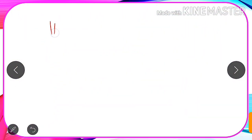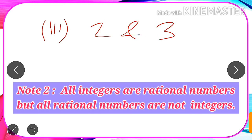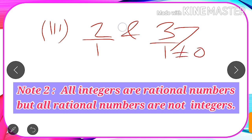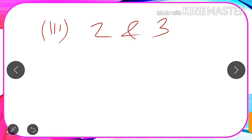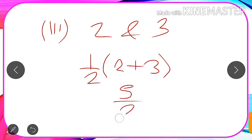Let us see another example. If we are asked to find a rational number between 2 and 3 — both are rational numbers since they can be expressed as 2/1 and 3/1, where 2, 3, and 1 are integers and 1 is not equal to 0. Every integer is a rational number. So we find the average: 1/2 of (2 plus 3), which gives 5/2 as our answer.